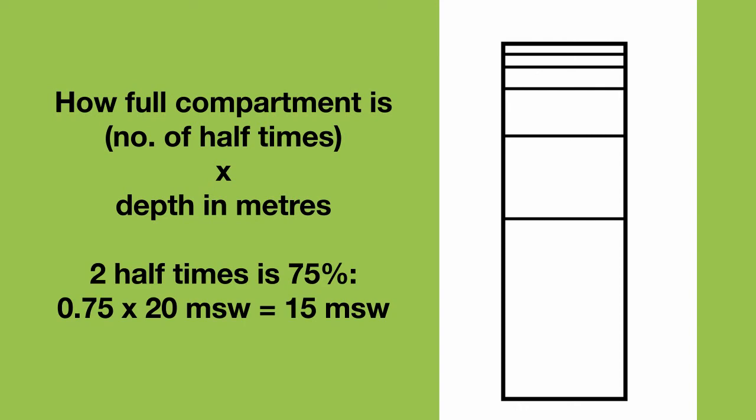For example, two half times is 75%, and 75% of 20 meters is 15 meters - 0.75 times 20.